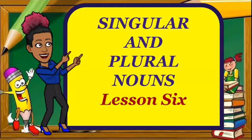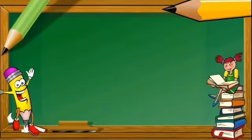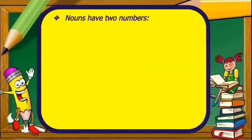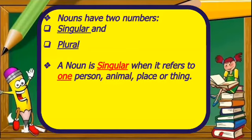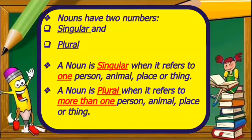Singular and Plural Nouns, Lesson 6. Nouns have two numbers: singular and plural. A noun is singular when it refers to one person, animal, place or thing. A noun is plural when it refers to more than one person, animal, place or thing.